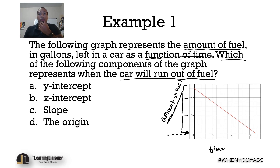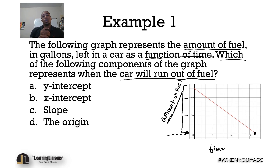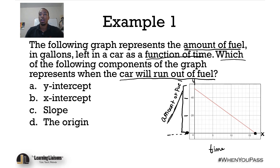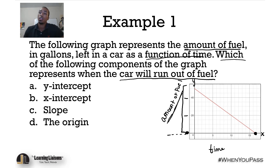When does this graph hit zero? That's all the way over where the line crosses the X axis. What matters is what that value represents — where the Y value is zero — and that's where we cross the X axis. That is called our X intercept.